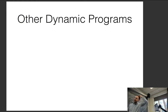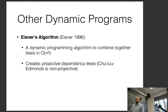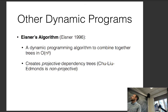There are other dynamic programs people use for parsing dependency parses. One is Eisner's algorithm, named after Jason Eisner at JHU — a dynamic programming algorithm to combine trees in O(n³). It's very similar to CKY, basically a modification of CKY for dependency parsing. Importantly, like many dynamic programming algorithms, it can only find projective dependency trees. Non-projective trees have crossing arcs, which is rare in English.